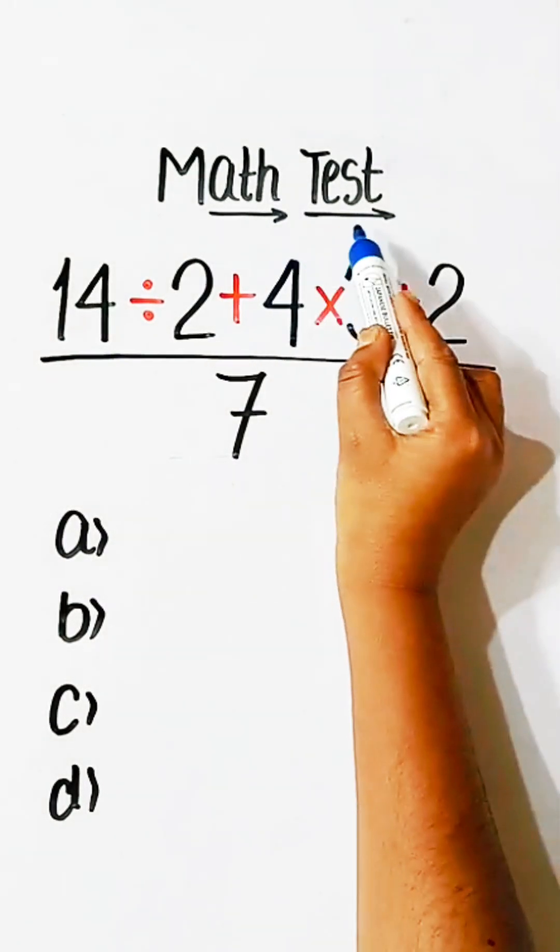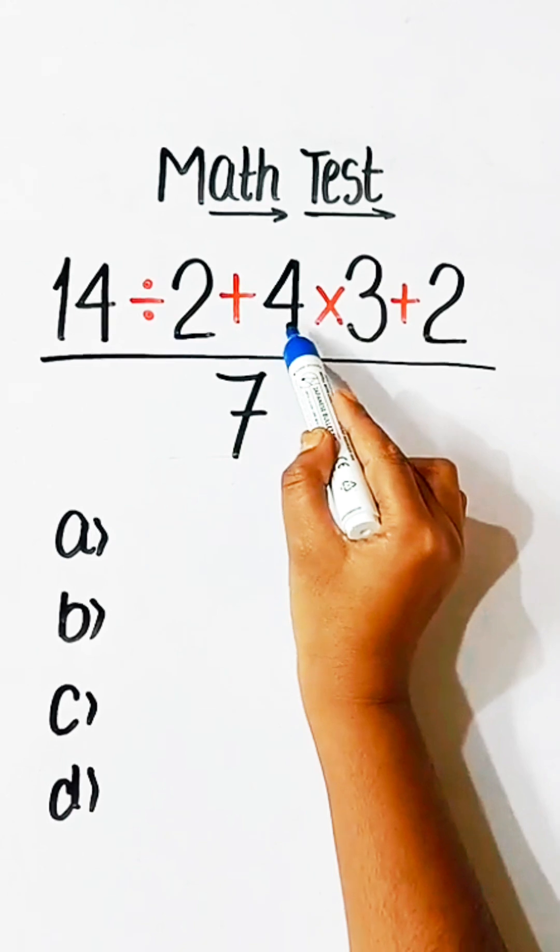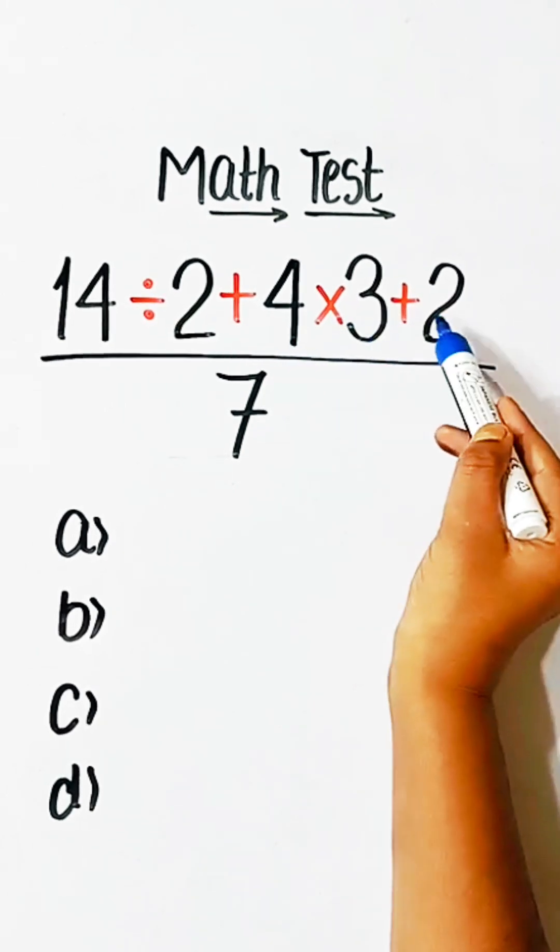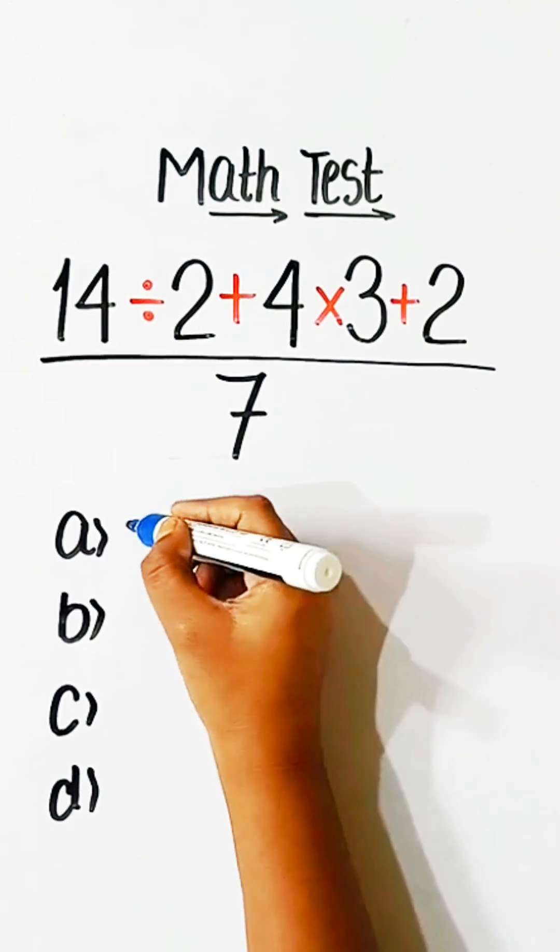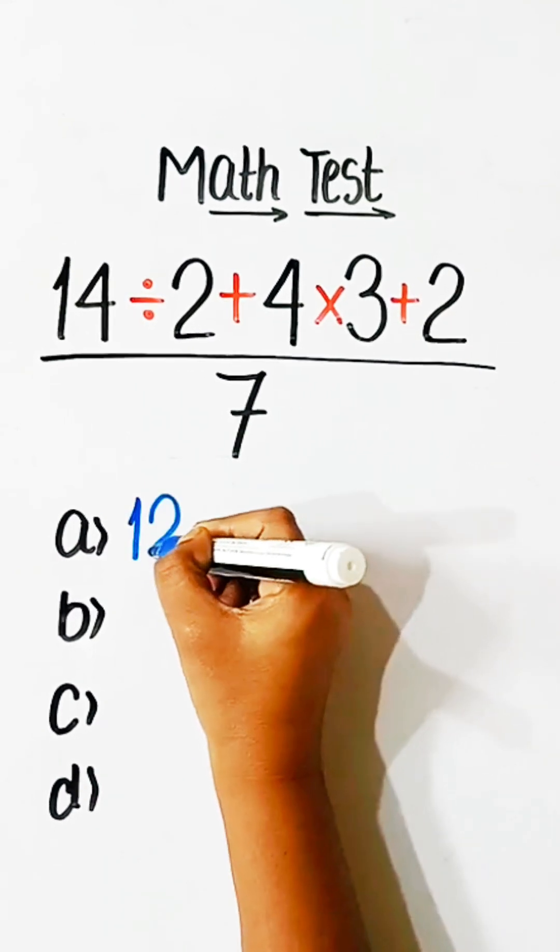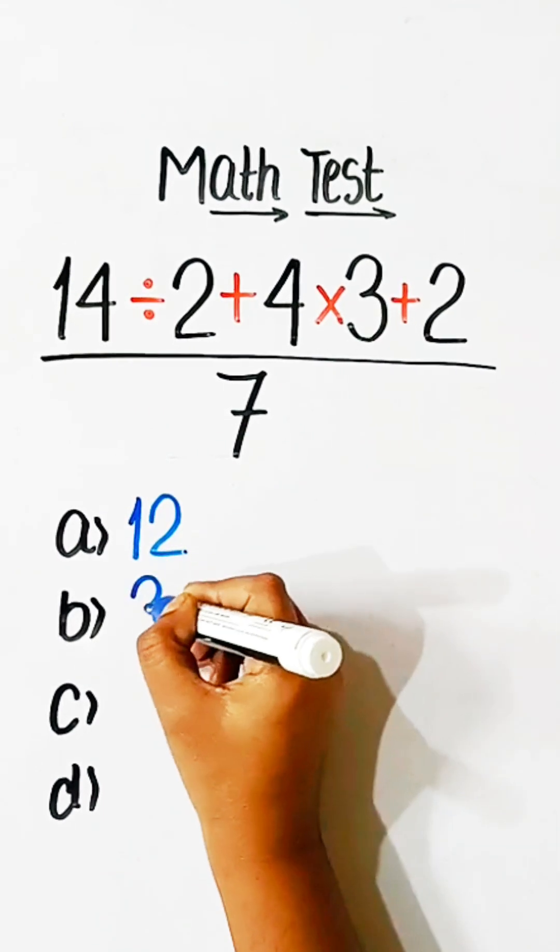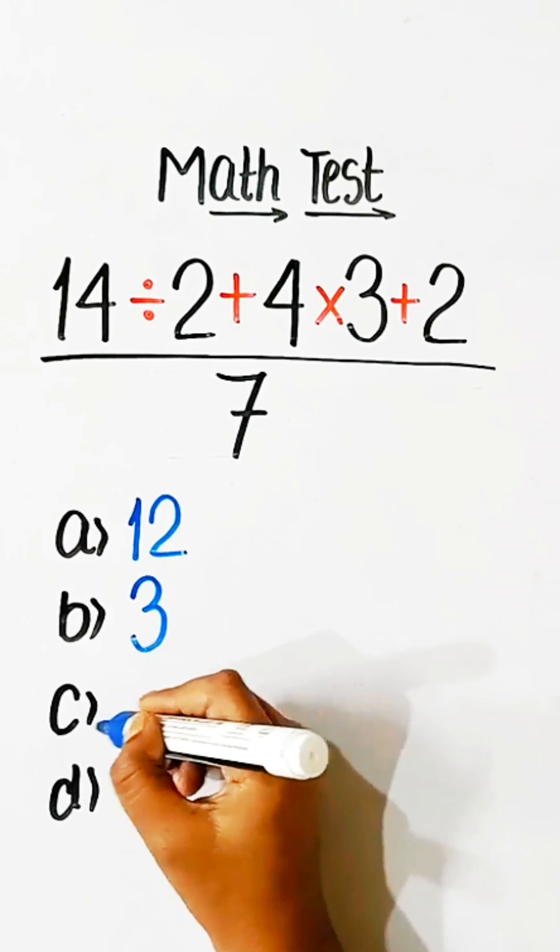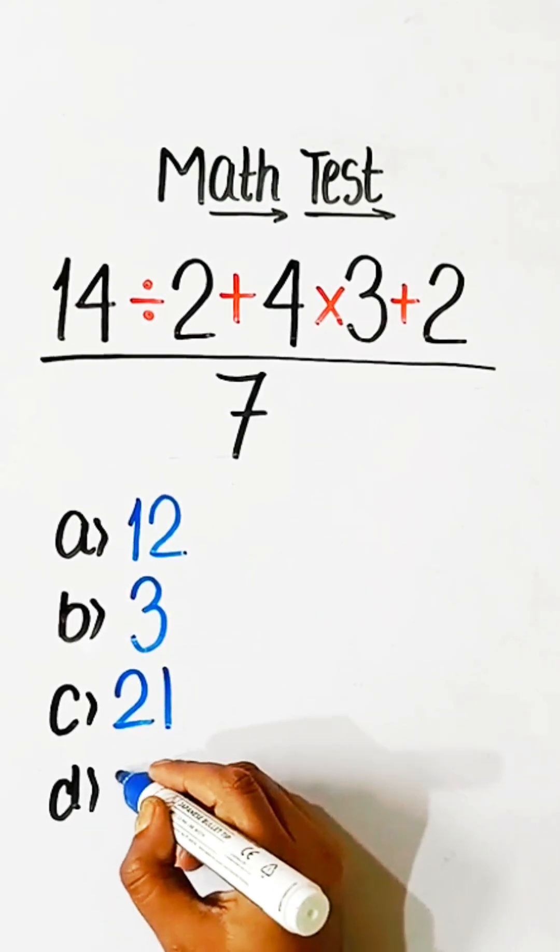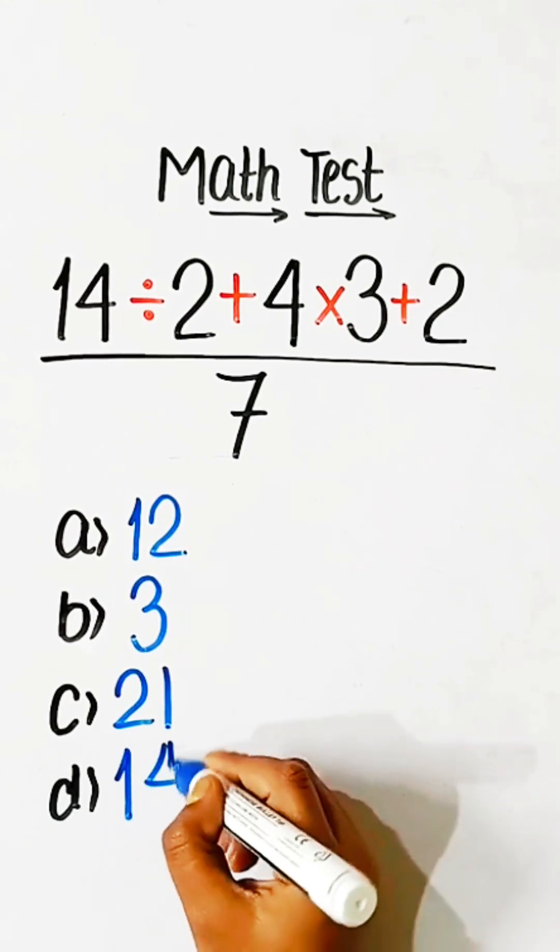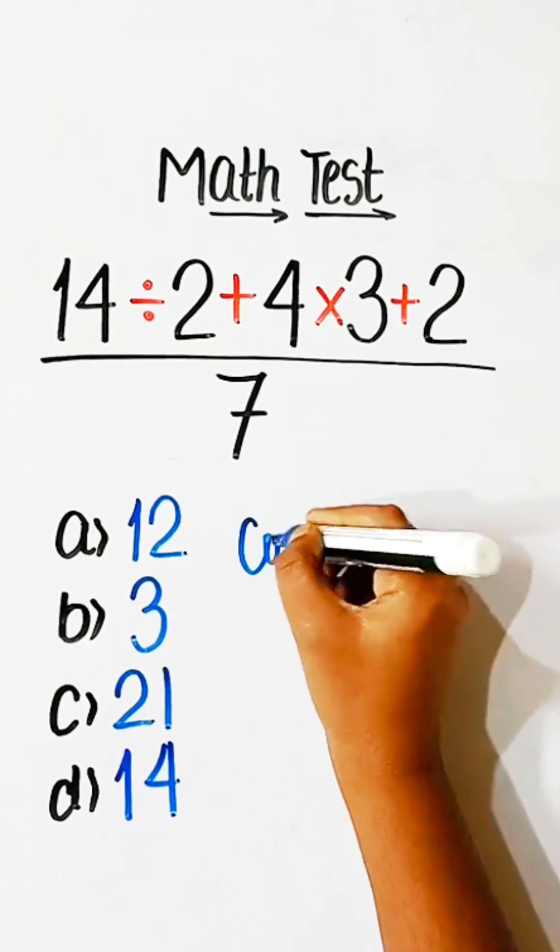Math test: 14 divided by 2 plus 4 into 3 plus 2 upon 7 equals what? Option A: 12, Option B: 3, Option C: 21, or Option D: 14. Comment your answer.